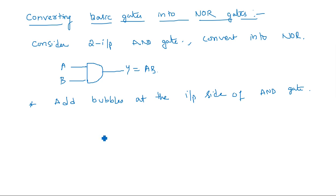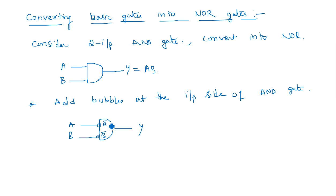Similarly, opposite is the case for OR gate: for NAND conversion we added bubbles at the input side, but for NOR conversion we add a bubble at the output of the OR gate. Adding bubbles at the input of the AND gate gives A-bar and B-bar as inputs, resulting in output A-bar · B-bar, which equals (A + B)-bar — that is NOR operation, not the AND operation we need.